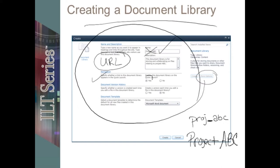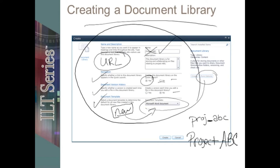For navigation, you can choose quick launch or not — this can be changed at any time later. Version history can also be changed later. Even the document template can be changed, though it's not quite as simple as changing navigation or history. The template doesn't stop anyone from uploading any file type that SharePoint supports; it is connected to the New button, which creates a brand new empty Word document that, when saved, goes back into the appropriate library.